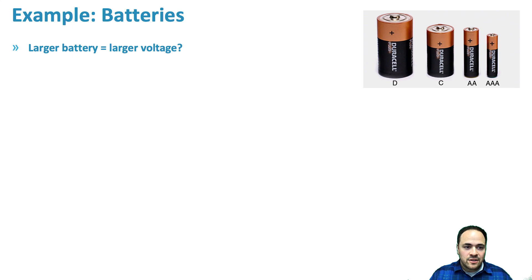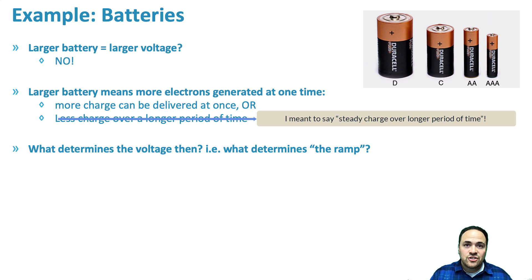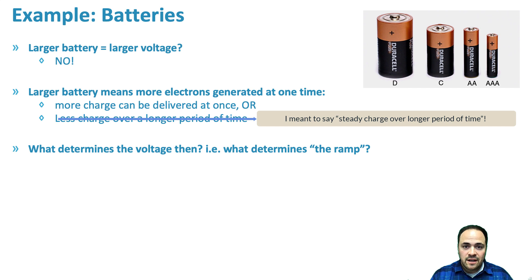Does a larger battery mean larger voltage? No. A larger battery means it can supply more charge all at once, or supply less charge over a longer period of time. All of the common batteries — D cell, C cell, AA, AAA — actually have the same voltage: 1.5 volts. They all apply the same voltage across a circuit. The difference is how much current they can provide, or for how long they can sustain a steady flow of charge.